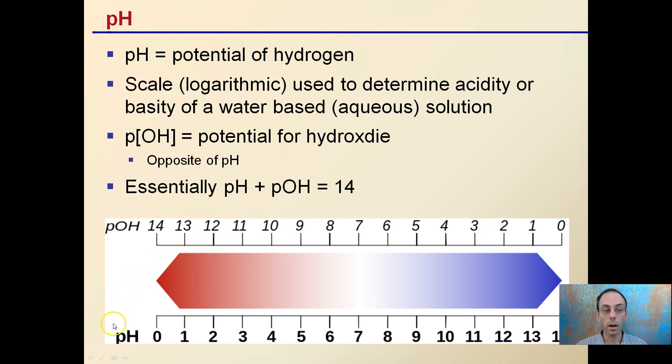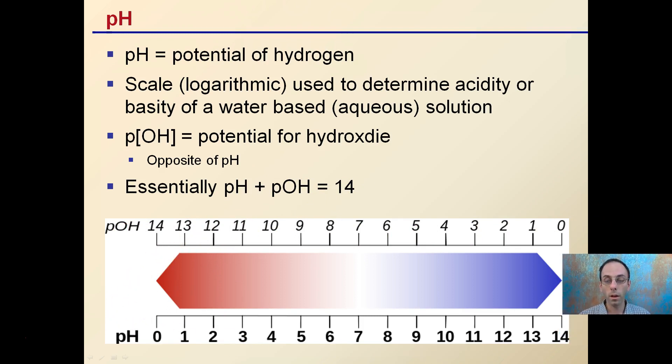So again, we're focusing on the hydrogen ions here, the 0 to 14 scale. There's also pOH that works on the same 0 to 14 scale. It's kind of just the opposite. But again, our focus here is pH.